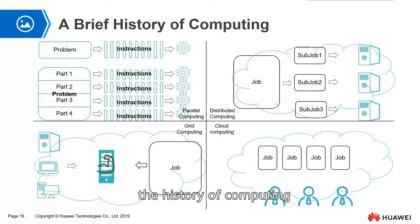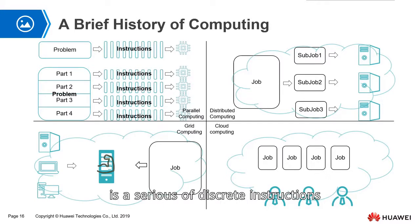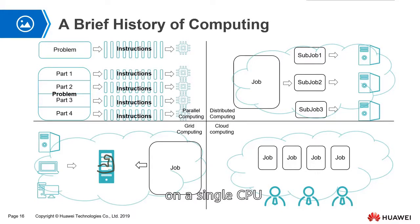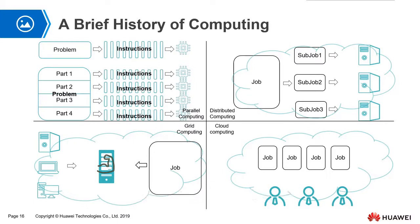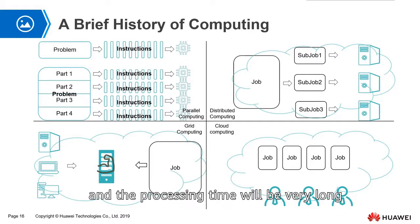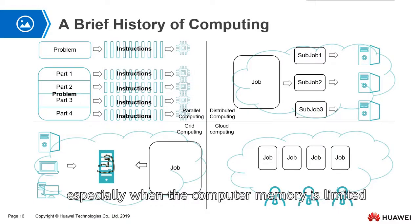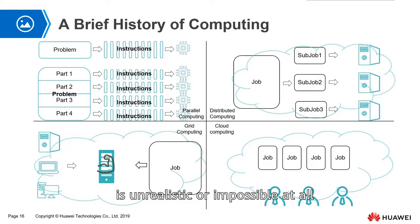Let's take a look at the history of computing. Traditionally, the general software design has a series of discrete instructions. An instruction will be executed one by one on a single CPU, and each CPU can only process one instruction at one time. If the problem is only serial, the problem is too complicated and the process time will be very long. Solving a large problem with only a single CPU, especially when computer memory is limited, is unrealistic or impossible.